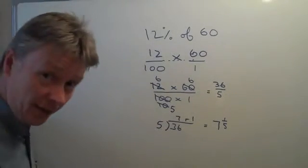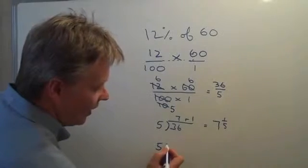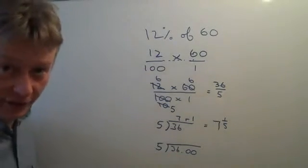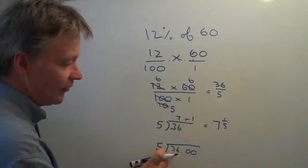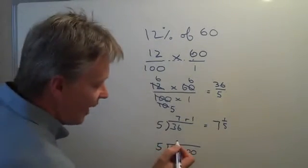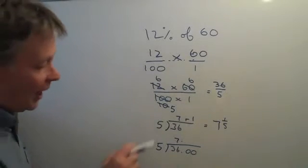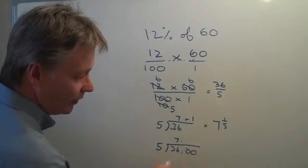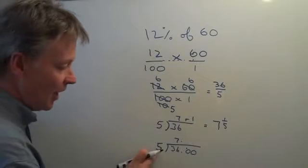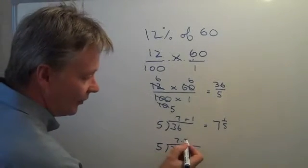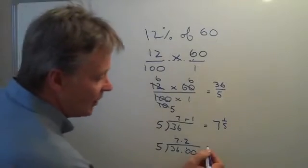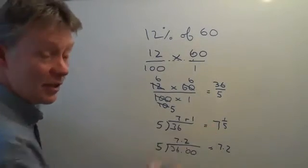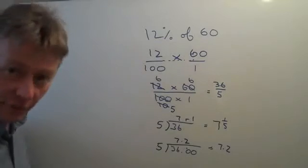Or I can use the same calculation to work it out as a decimal. To work it out as a decimal, I'm going to put 2 decimal places after the 36. So 5 into 3 doesn't go. 5 into 36 goes 7. And as I mentioned before, I have 1 left. But this time rather than making it 1/5, I'm going to put that 1 over there. And the question is going to be how many lots of 5 are there in 10? There are 2. So the answer to this question, which is 12% of 60, is either as a fraction 7 and 1/5, or as a decimal, 7.2.